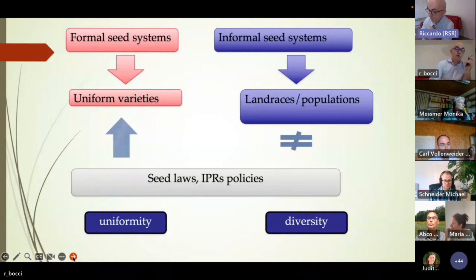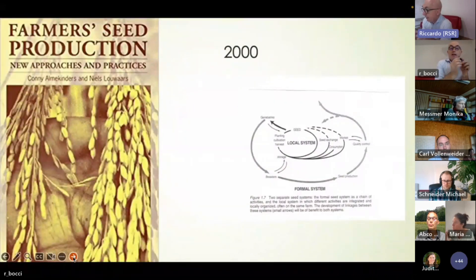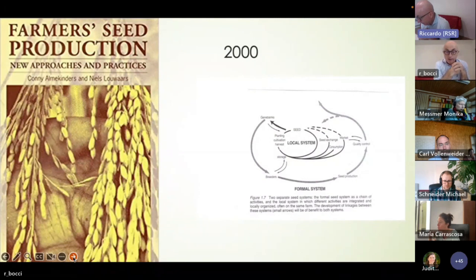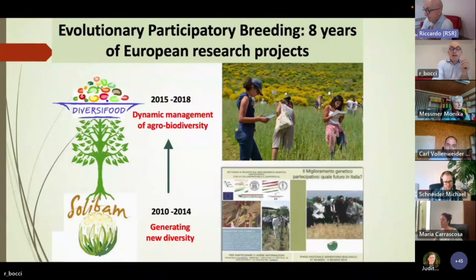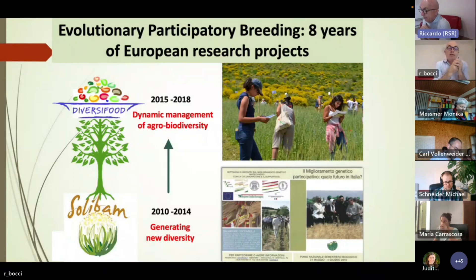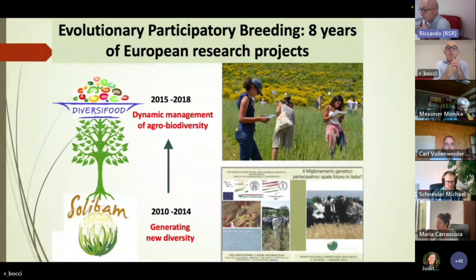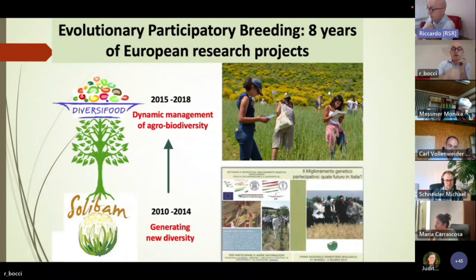Let me start with some historical background. One key book written about 20 years ago by Connie and the Klinders and the Rulers opened up the discussion about diversified seed systems and the idea of also supporting informal seed systems. Then at the European level, we had two major EU projects that set up the concept of population, which was the basis for organic heterogeneous materials. The first was SOLIBAM, developed from 2010 to 2014, with many partners involved.